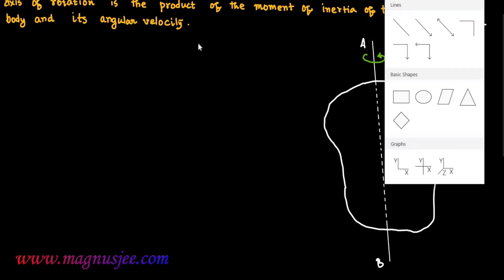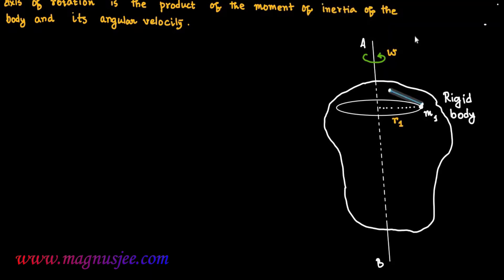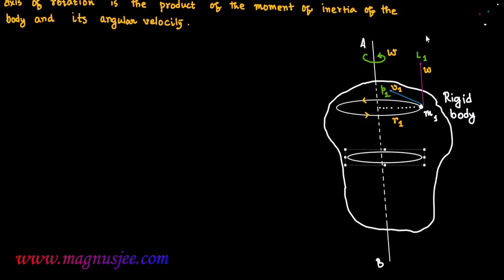We consider the first constituent particle of mass m1, which revolves in an imaginary circular orbit about the axis. This first constituent particle is at a perpendicular distance r1 from the axis of rotation, and r1 is also the radius of the imaginary circular orbit in which the first constituent particle revolves in an anticlockwise direction. v1 is its linear velocity, p1 is its linear momentum, omega is the angular velocity acting vertically upwards, and l1 is its angular momentum.